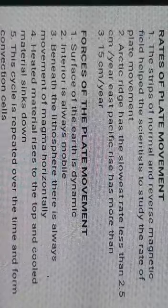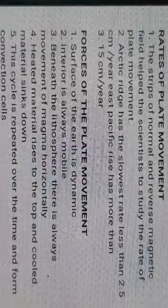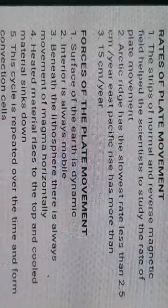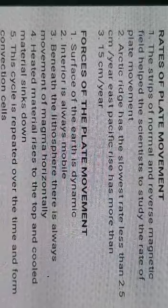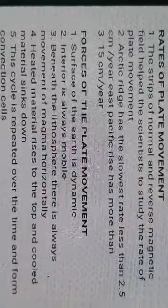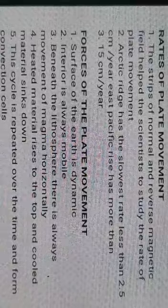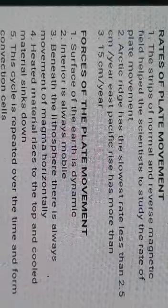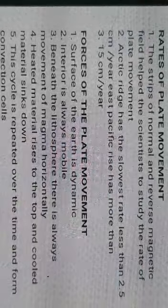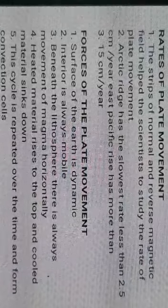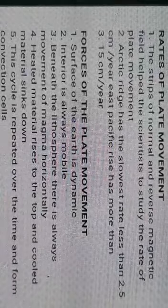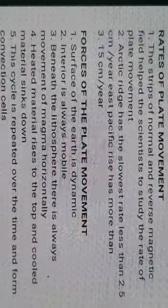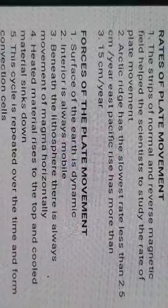As we discussed in plate tectonic theory, plates move all over the earth, but the rate of plate movement is very slow. The strip of normal and reverse magnetic fields helps scientists study the rate of plate movement. Paleomagnetic facts — the properties of rocks and magnetic fields — help us know the rates and ages of different plates. The Arctic Ridge has the slowest rate at less than 2.5 centimeters per year, while the East Pacific Rise has more than 3.15 centimeters per year. For MCQ purposes: the slowest plate boundary is the Arctic Ridge and the fastest is the East Pacific Rise.